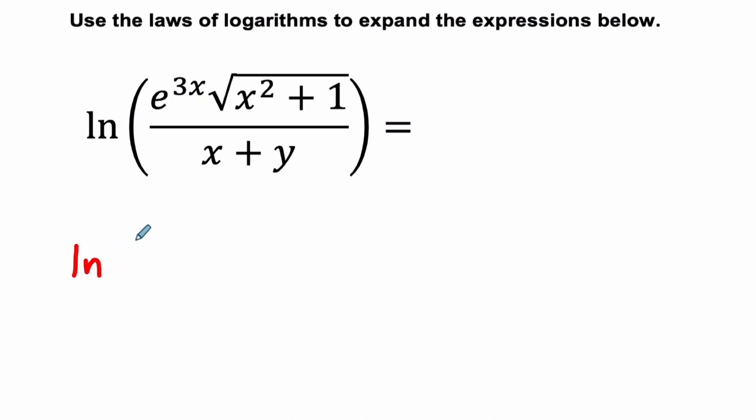This is the same thing as ln, the natural log of e to the power of 3x, and then I'm going to split these things apart times the square root of x squared plus 1 times what? 1 over x plus y, which I'm going to rewrite that last part as x plus y to the negative first. It's just a definition of exponents. x plus y to the negative first literally equals 1 divided by x plus y.